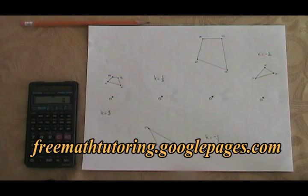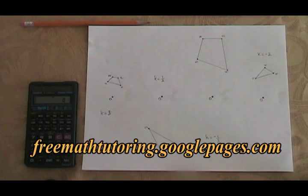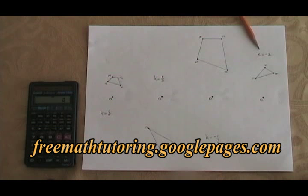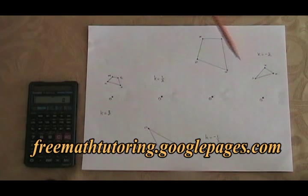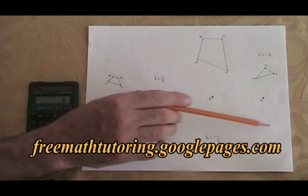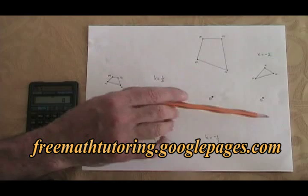The first thing you need to know about a size transformation is that you have to look at the k-value, because it tells you a lot about what the answer is going to look like. Here, k is equal to negative two. The fact that it's negative means that the copy of my shape is going to end up on the other side of the zero dot, the origin, from where the original is.